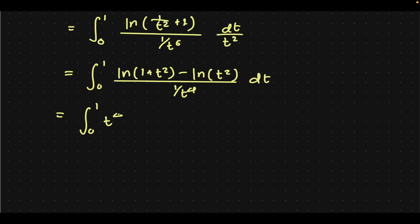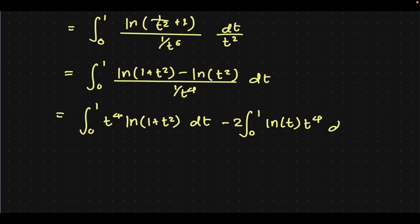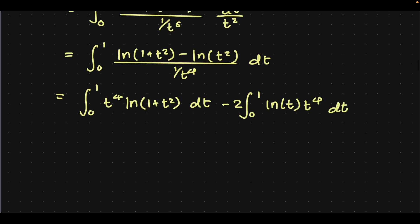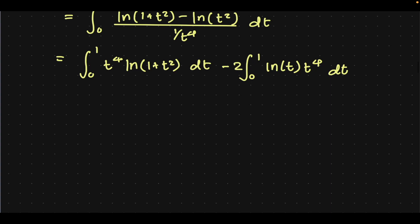We can simplify this significantly to give us the integral from 0 to 1 of natural log of 1 plus t squared, minus natural log of t squared, divided by 1 over t to the 4th, dt. We can use the linearity or the property of the natural log to give t to the 4th times natural log of 1 plus t squared, dt, minus the integral from 0 to 1 of 2 times natural log of t times t to the 4th, dt. Now we can divide both of these into two integrals, I1 and I2.